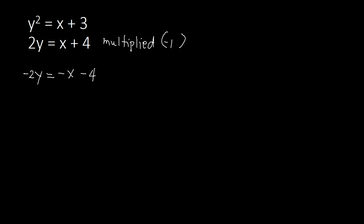We rewrite the first equation: y squared equal to x plus 3. Now we eliminate x using addition. Positive x plus negative x leads to 0, so x is eliminated. Adding everything else, we have y squared minus 2y on the left, and 3 plus negative 4 equals negative 1 on the right. So we get y squared minus 2y equal to negative 1.